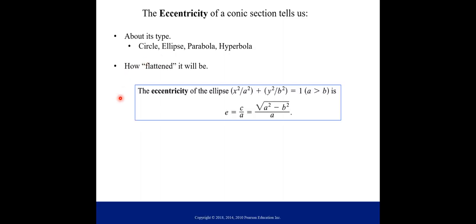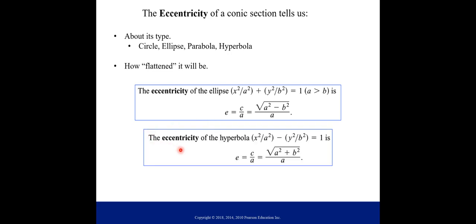So here is the eccentricity of an ellipse, but notice this is in Cartesian coordinates still. And so this is the formula for how you can calculate your eccentricity of an ellipse. Here is the eccentricity of a hyperbola, again the equation is in Cartesian form still. And then here is the eccentricity of a parabola, just a nice number one.